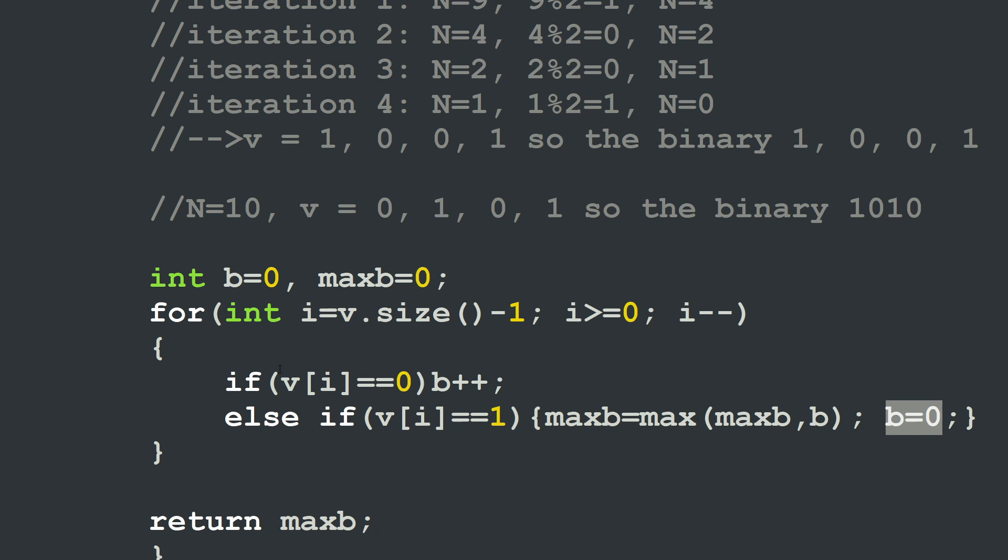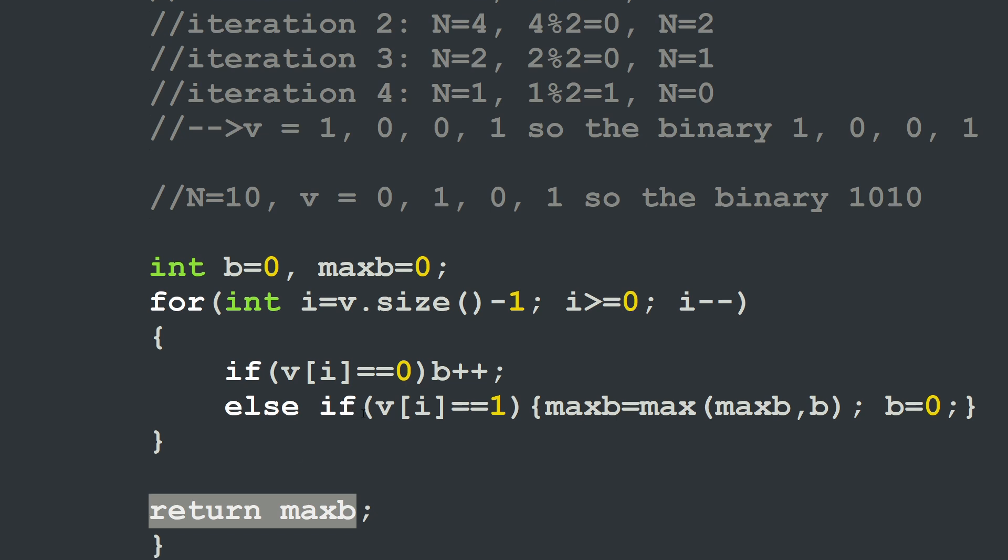We continue looping inside of this for loop until we have exhausted all our elements in the v vector. And when I'm done, I can simply return the maximum value, the maximum number that I have reached counting the number of zeros. So this is it for the C++ version. Let's go and see the Python version.